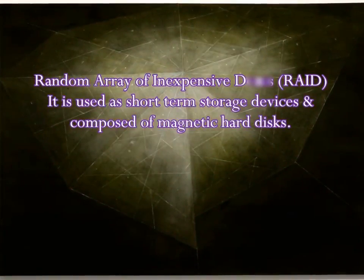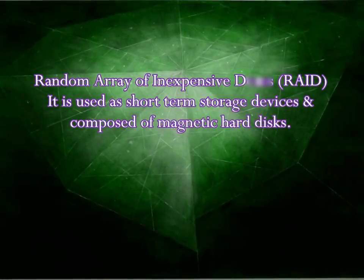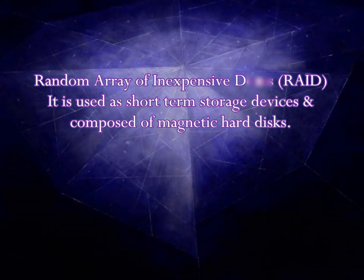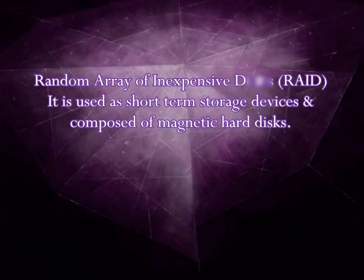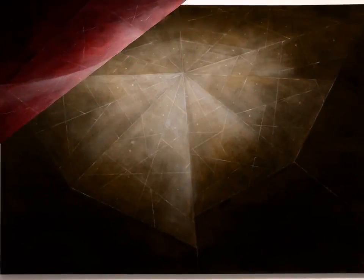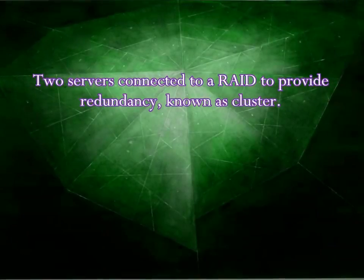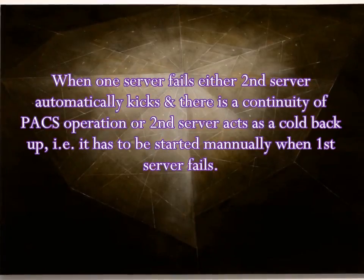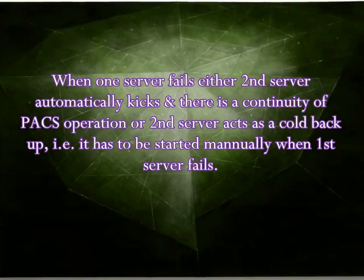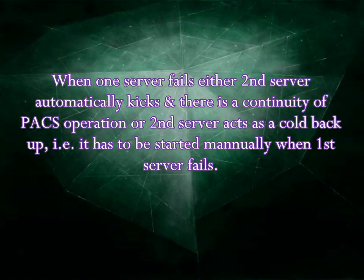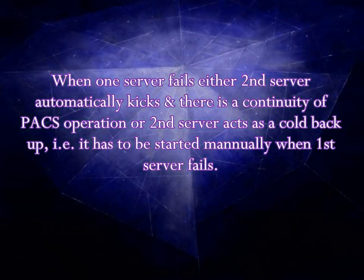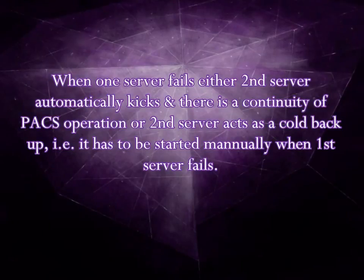RAID (Redundant Array of Inexpensive Disks) is used as a short-term storage device and is composed of magnetic hard disks. Two servers connected to RAID provide redundancy, known as a cluster. When one server fails, either the second server automatically kicks in for continuity of PACS operation, or the second server acts as a cold backup — meaning it has to be started manually when the first server fails.